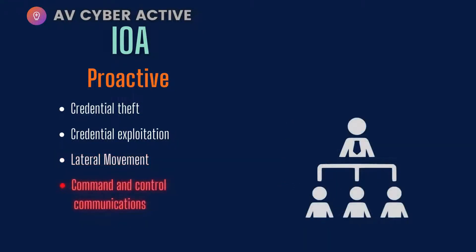Command and control communication is probably the most important IOA indicator. If you see C2 communications taking place, it means the intruder has already infiltrated your network and may be trying to call home to maintain persistency.